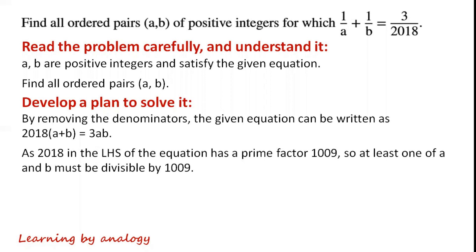2018 appears on the left-hand side of the equation. The equation has a prime factor 1009. So at least one of A and B must be divisible by 1009.